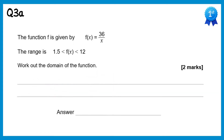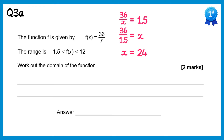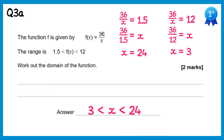For this question we also need to work out the domain, so we write the function equal to the endpoints of the range. 36 over x equals 1.5 gives x equals 36 divided by 1.5, which is 24. Using the other endpoint, 36 over x equals 12 gives x equals 36 over 12, which is 3. So the domain is x between 3 and 24.